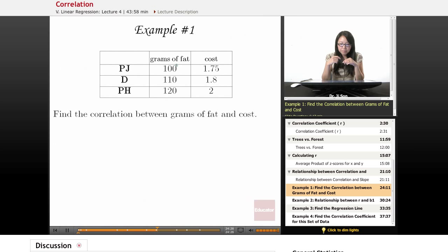Find the correlation between grams of fat and cost. I think these are for whole pizzas, so let's make this $17.50, $18, and $20, because it's really cheap to have a $1.75 pizza and it would be ridiculous to have 100 grams of fat in one slice of pizza.